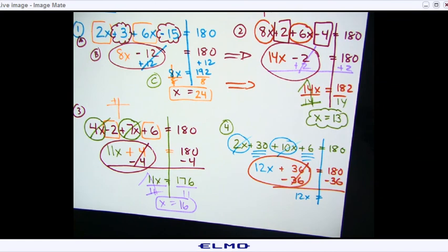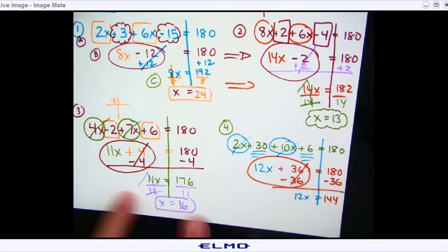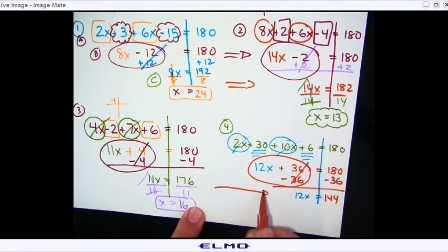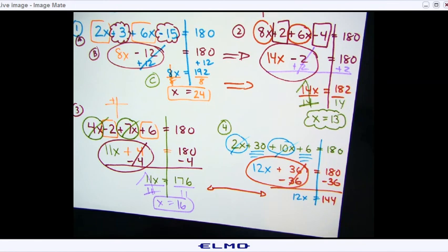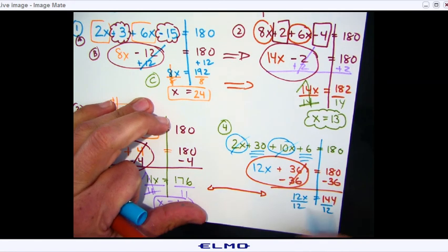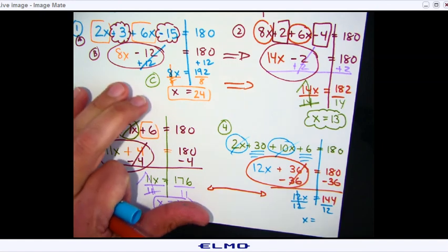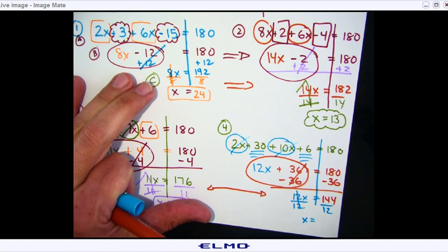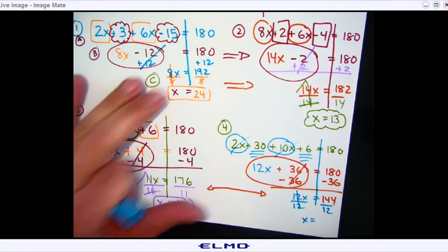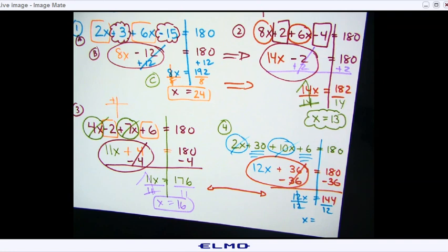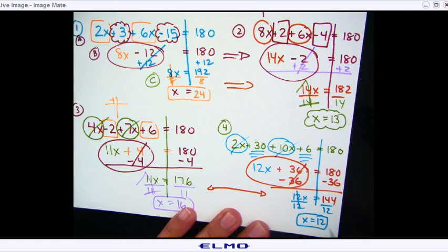Now do the same thing — take away 36 on both sides. That gives you 12X equals 180 take away 36. Using my calculator: 180 take away 36 is 144. Then divide by 12. And your answer is 12. So X equals 12.